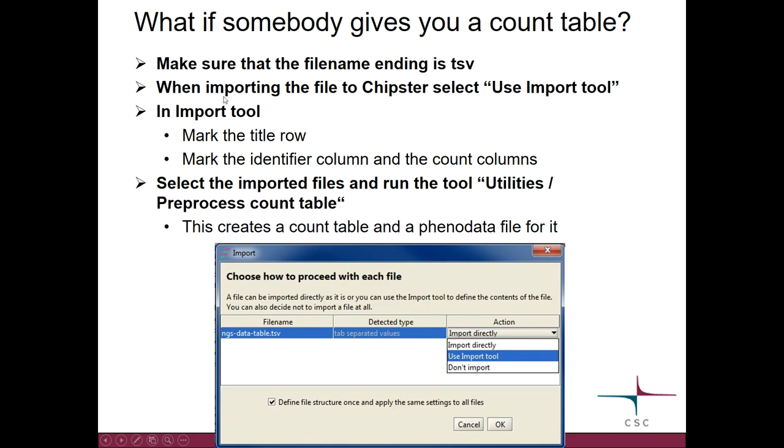And so when you bring it in, Chipster will ask you, you will get this kind of window, and it will ask you, well, what do you want to happen to this file? So you need to select use import tool, which will take you to a separate window where you can mark the title row of your table. Then you also want to mark which column contains the gene identifiers and which are the sample columns or the count columns.